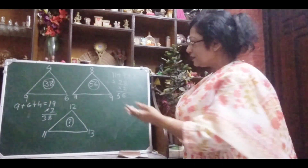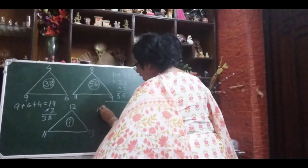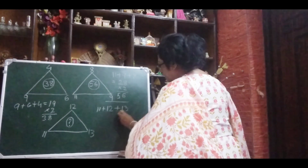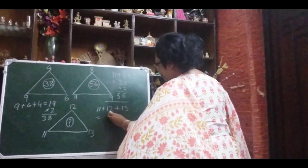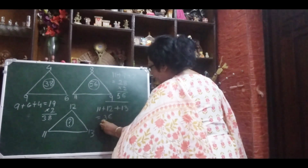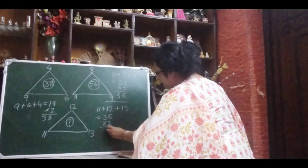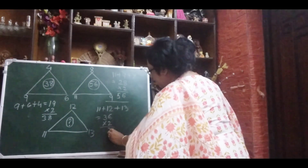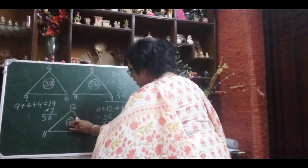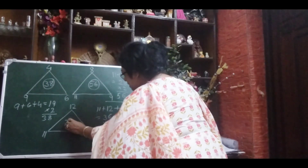Now for the third triangle, we do: 11 plus 12 plus 13 equals 36. Same thing — multiply by 2. 36 multiplied by 2: 6 twos are 12, carry 1, 6 twos are 12 plus 1 is 13... So 36 multiplied by 2 is 72. Our missing number is 72.